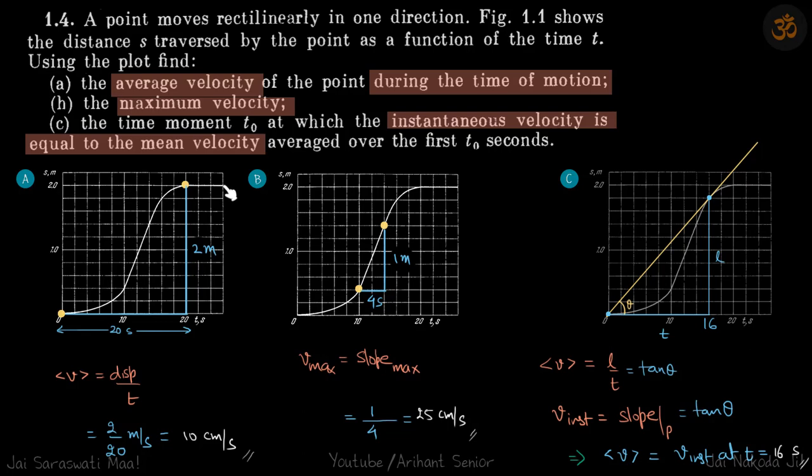Don't get confused and don't take the time up to here, because time of motion is only up to here. After that, the displacement is constant, which means the particle is not moving anymore, it is at rest. So we need to find the average velocity up to this time.